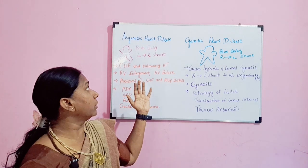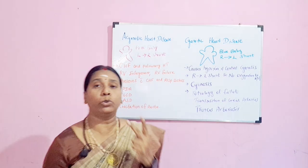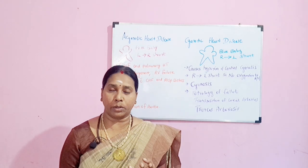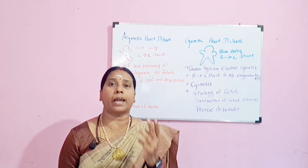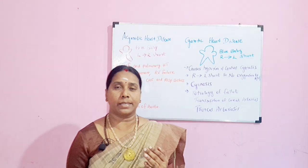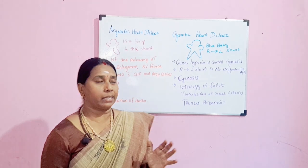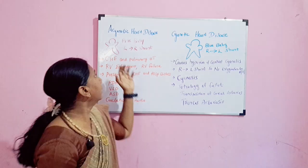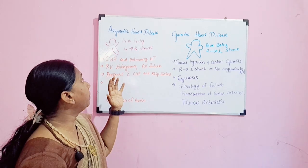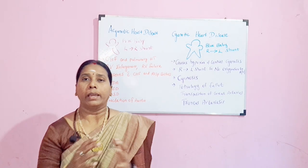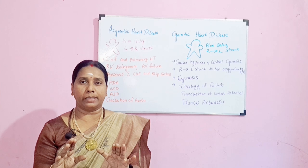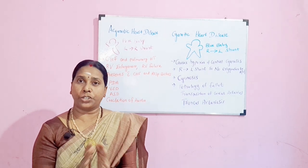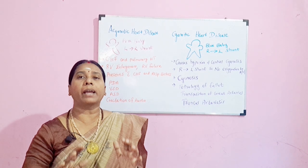When it comes to congenital heart disease, we have two types: acyanotic congenital heart disease and cyanotic heart disease. In acyanotic heart disease, the baby is described as a pink baby — there is no cyanosis, meaning the baby's body color does not change; the baby remains pink.